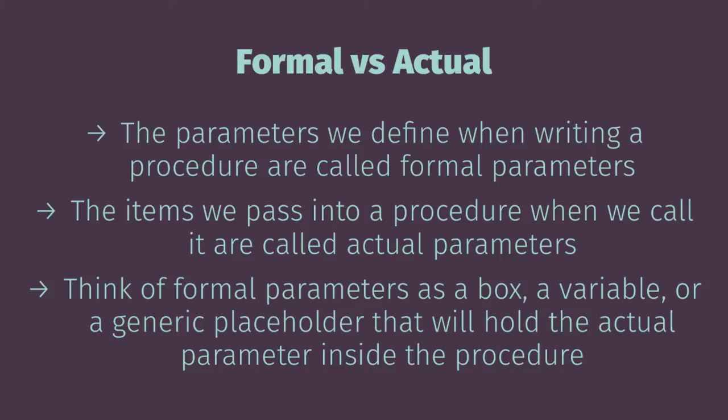The formal parameter is how the internals know the item; the actual value is how you or I know the item being passed into the system. So formal parameter: how the machine internally refers to 'card' or 'pin'. Actual parameter: my card, your card, my pin number, your pin number.